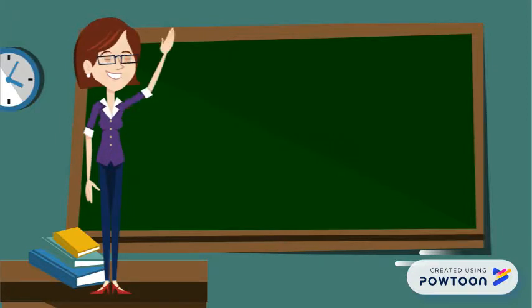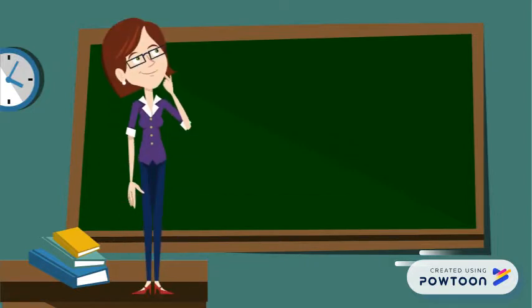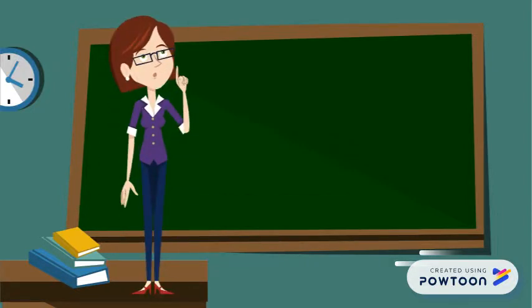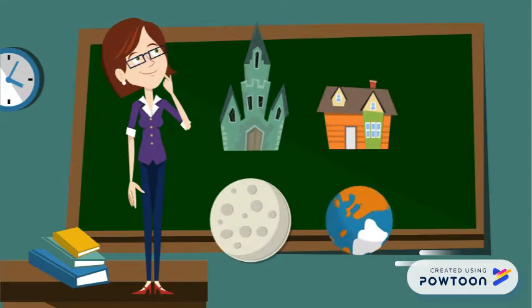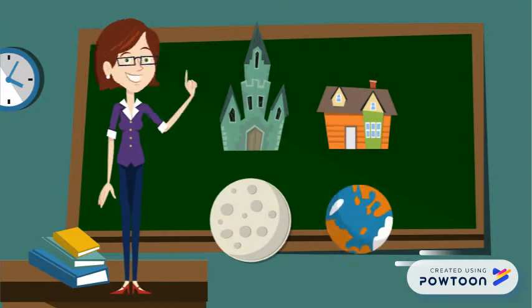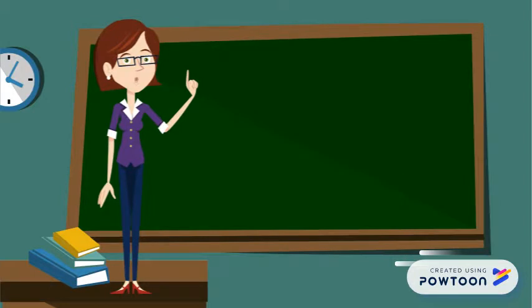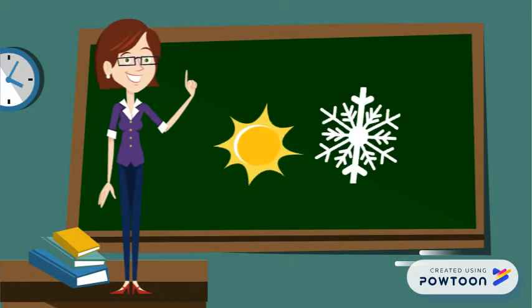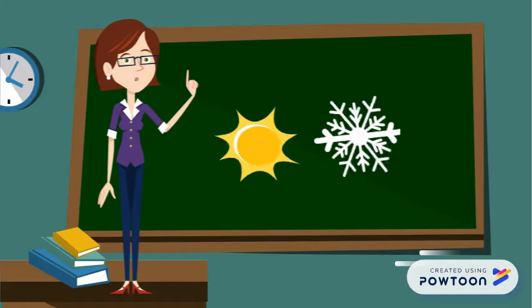Today let's talk about setting in a story. What is a setting? Well, a setting is somewhere where your story takes place. A setting can be a castle, a house, the moon, planet X — the possibilities are only limited by your imagination. But settings can also be the time of year or the season.